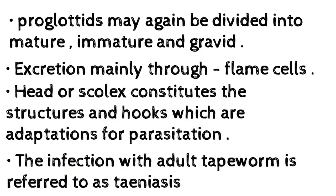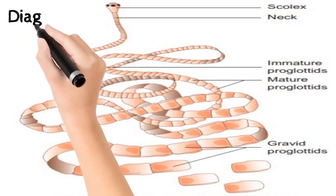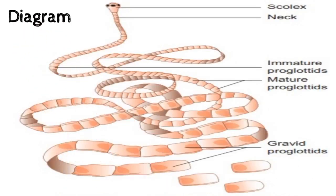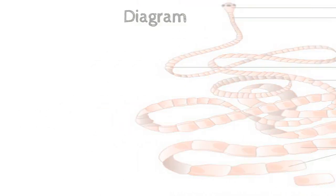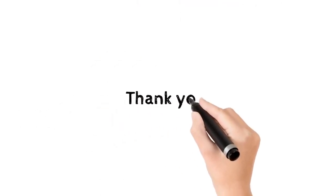Infection with the adult tapeworm is referred to as teniasis. Here you can view the diagram of the tapeworm, which shows the structure of an adult tapeworm that you can draw in your exams for good marks.